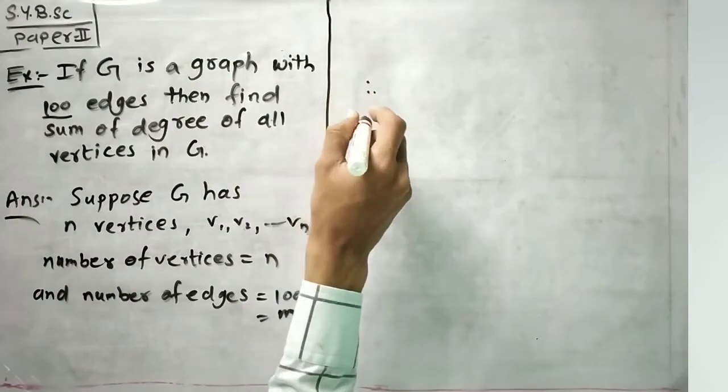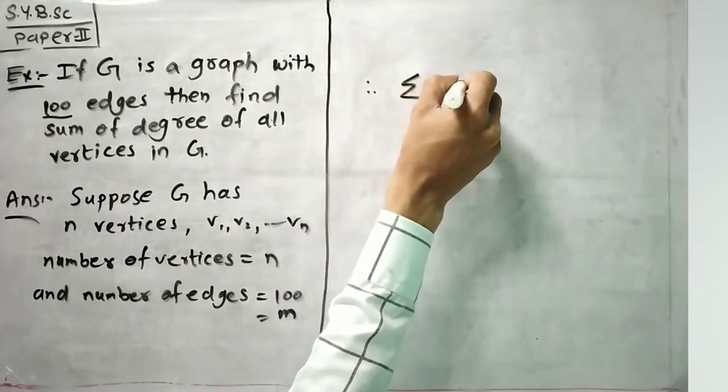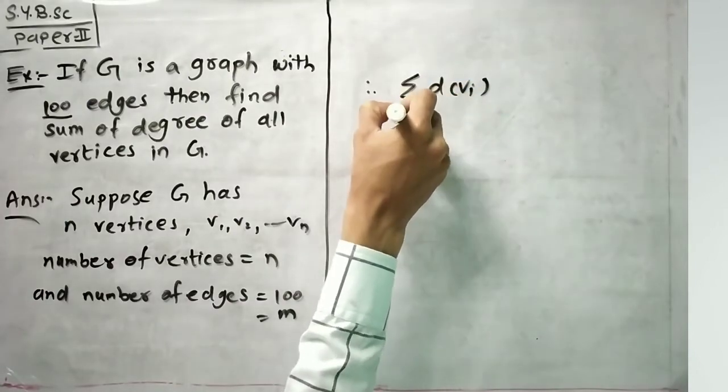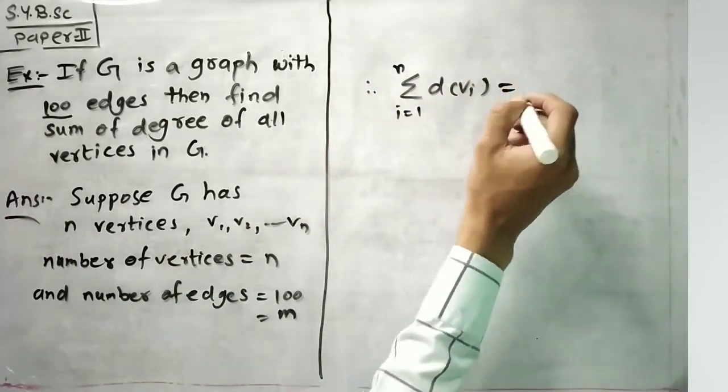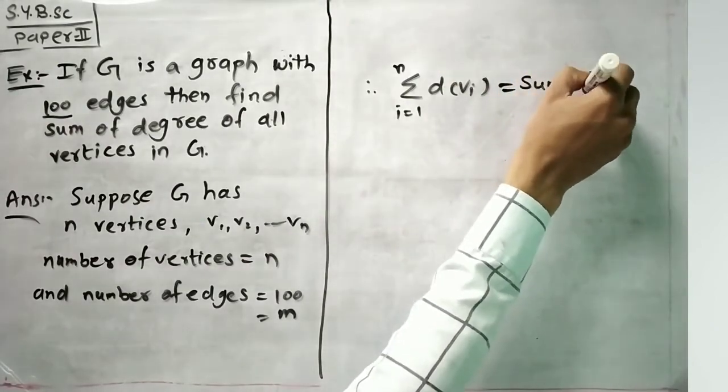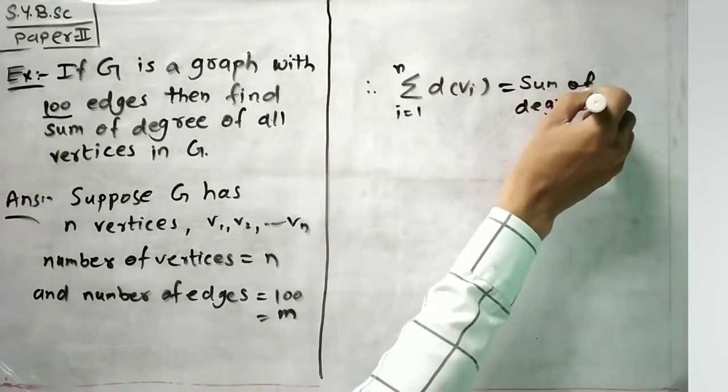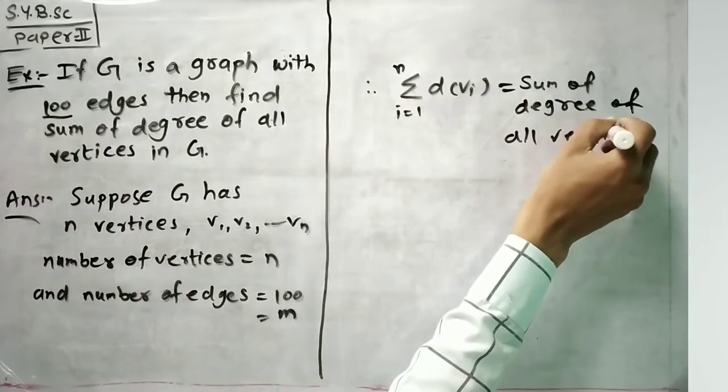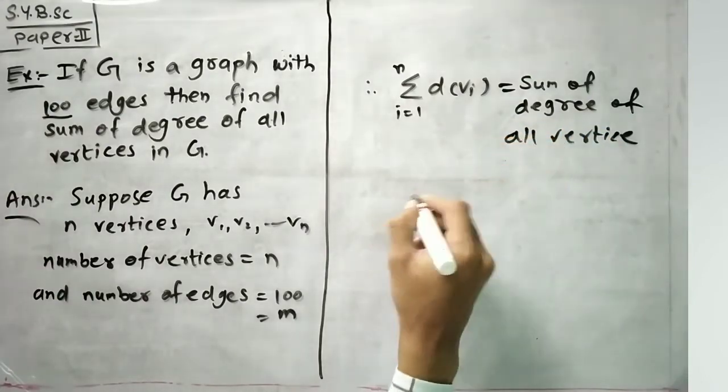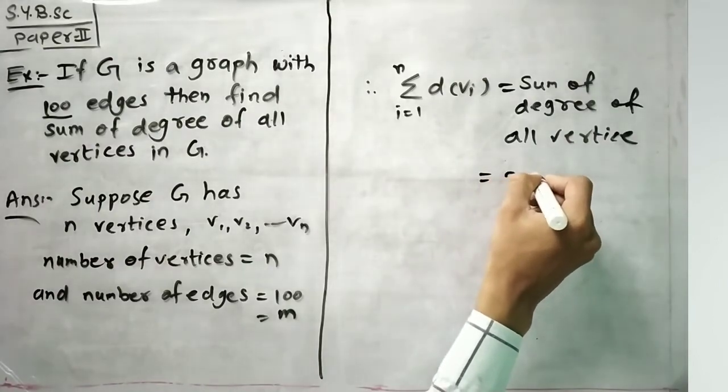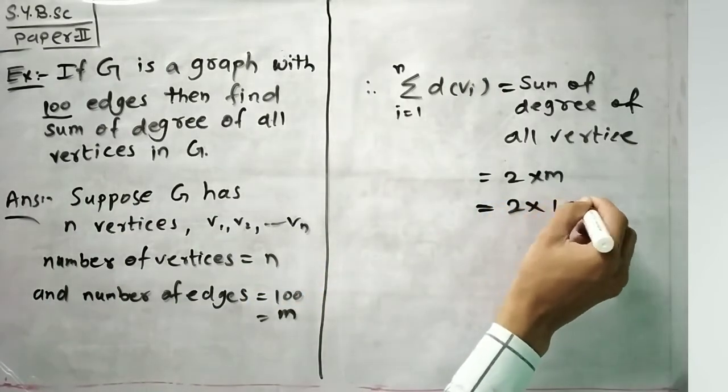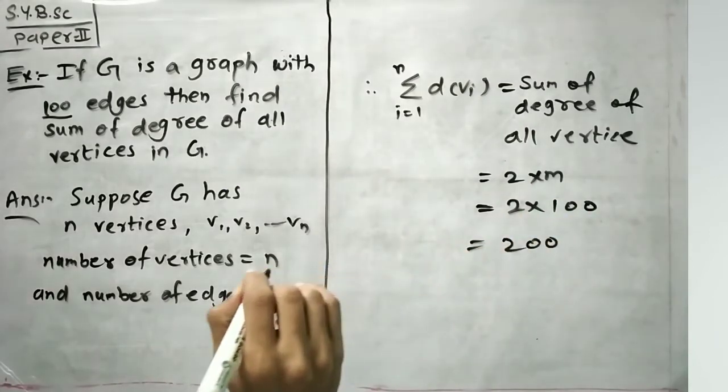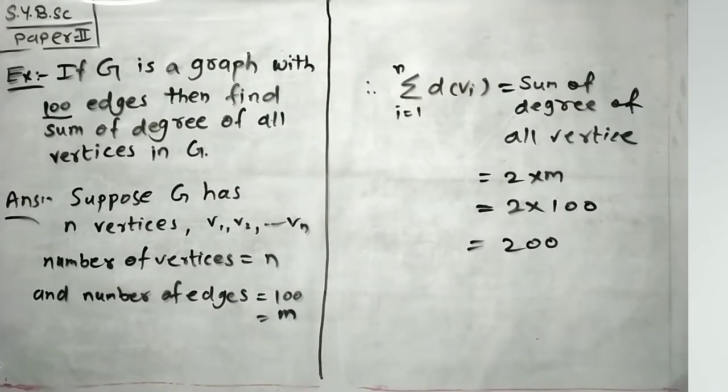So simply use the formula: sum of degree of vi where i runs from 1 to n, because there are n vertices, is equal to, we have to find sum of degree of all vertices, which is equal to 2 into m by theorem. Now 2 into m is given as 100, so 2 into 100 is 200. So the sum is 200.